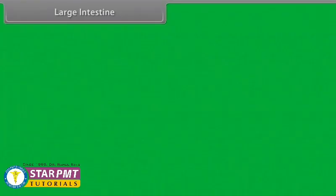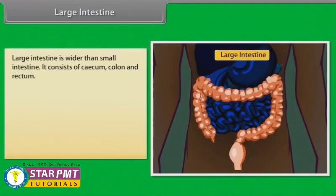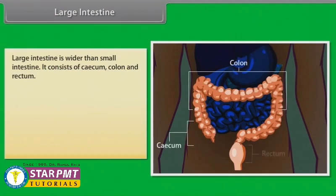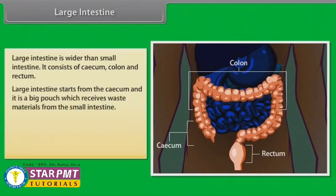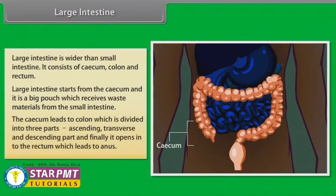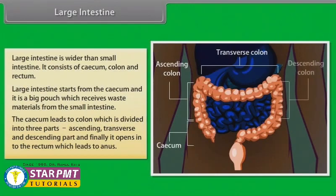The large intestine is wider than the small intestine and consists of the caecum, colon, and rectum. It starts from the caecum, a big pouch which receives waste materials from the small intestine. The caecum leads to the colon, which is divided into ascending, transverse, and descending parts, and finally opens into the rectum which leads to the anus.